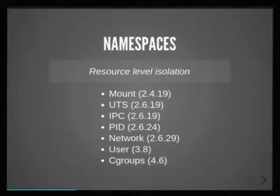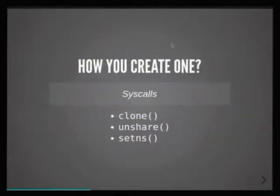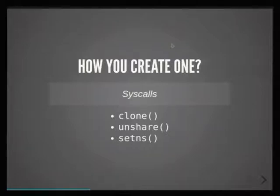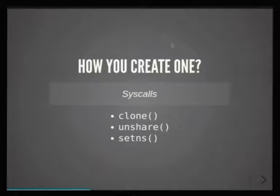You can do quite strange stuff with these things. How is a namespace created? There's a syscall called clone, which is basically the same as fork, but you can tell it to create a new namespace. You define what namespaces you're interested in, and if you create a new one, most of the time it's empty. For example, in the case of network: when you create a new namespace with network, the only device you see is loopback — no other devices. There's unshare, which means creating a new one because you're getting rid of the current one. And setNS is for adding to an existing namespace.